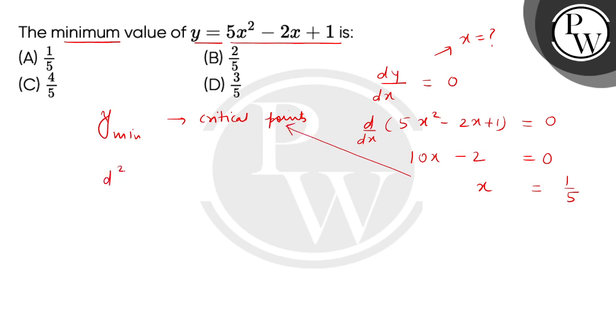Now we will find the second order derivative, d square y divided by dx square. So this is d by dx of our first order derivative 10x minus 2. When we differentiate it, we will get 10. Because d square y divided by dx square is 10, which is positive, therefore we get a minimum at x equals 1 by 5.